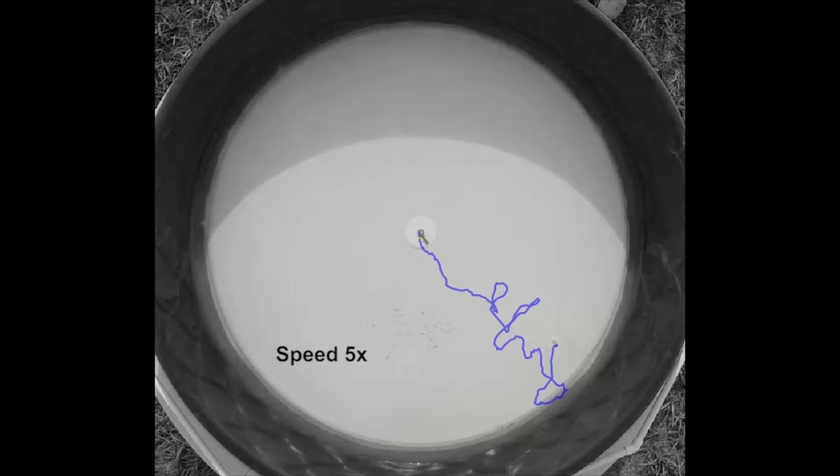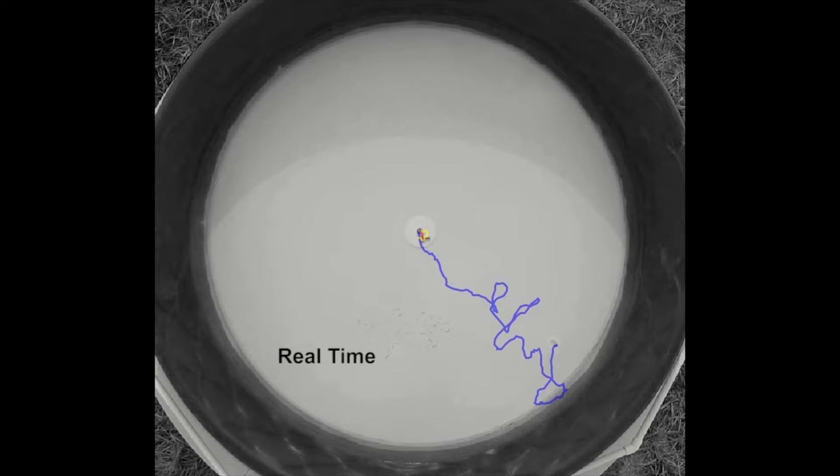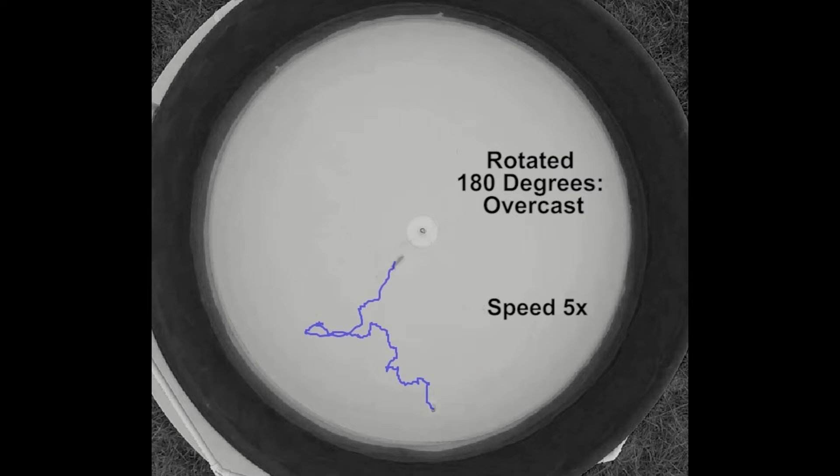We found that after being rotated 180 degrees under days with clear skies or partly cloudy skies when the sun was hidden by clouds, mantis shrimp correctly oriented home despite being rotated. However, under heavily overcast skies, mantis shrimp oriented approximately in the opposite direction of their homes. This indicated that mantis shrimp use celestial cues for orientation when available and rely on idiothetic cues when celestial cues are obscured.